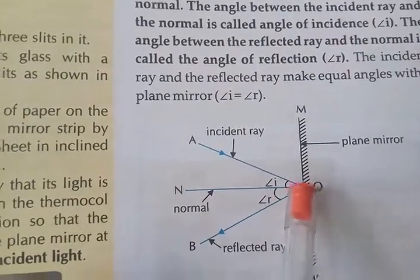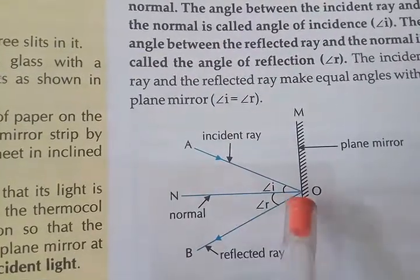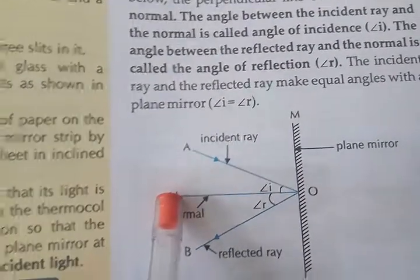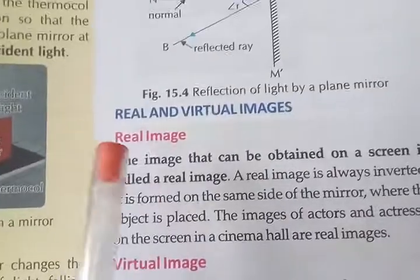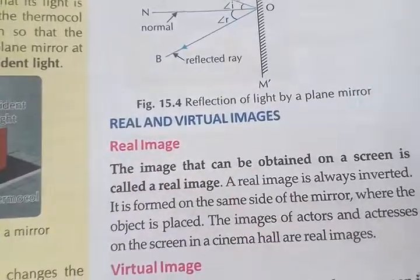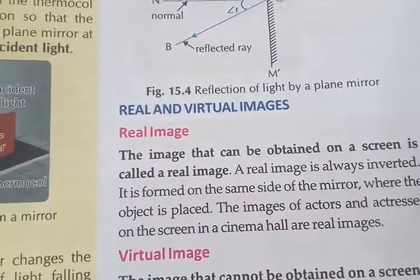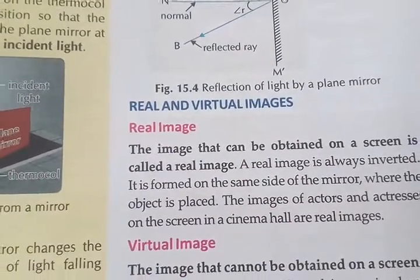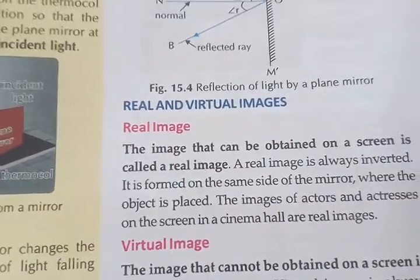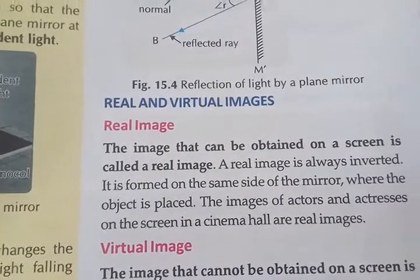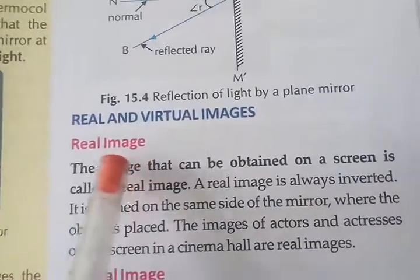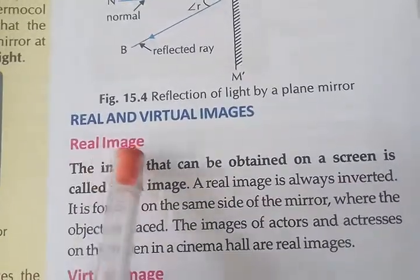The line drawn perpendicular to the mirror surface is called the normal. Today we will discuss real and virtual images, characteristics of images formed by a plane mirror, and images formed by a spherical mirror.